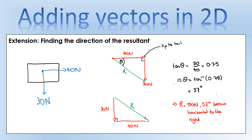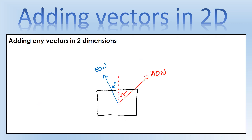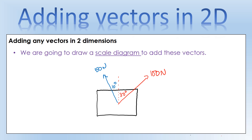That's adding perpendicular vectors in 2D. What about vectors that aren't perpendicular? Let's say we have a 50 newton force at 10 degrees to the vertical and a 100 newton force at 30 degrees to the vertical. Those aren't perpendicular so we can't just use Pythagoras' theorem. So how do we approach it? We draw a scale diagram to add these vectors.